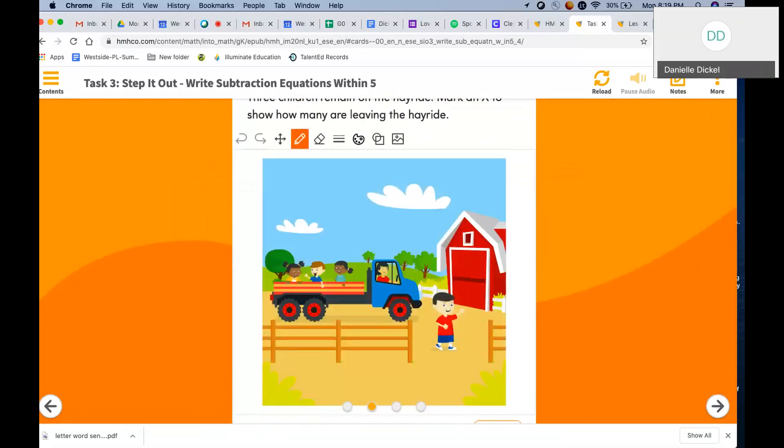So there were one, two, three, four children. We're not going to count the driver. We're talking only about the kids. So one, two, three, four friends. One friend left the hayride. How many friends are left on the hayride? Three. Three friends are left.